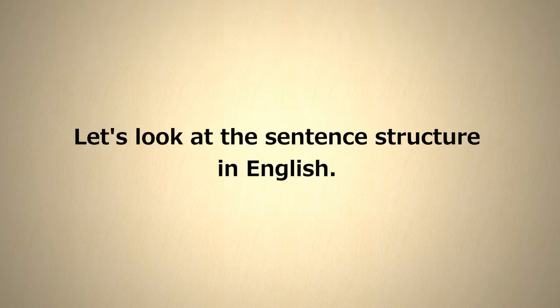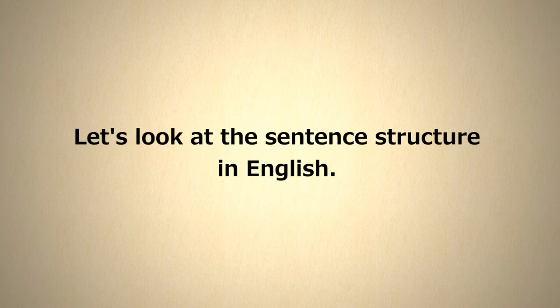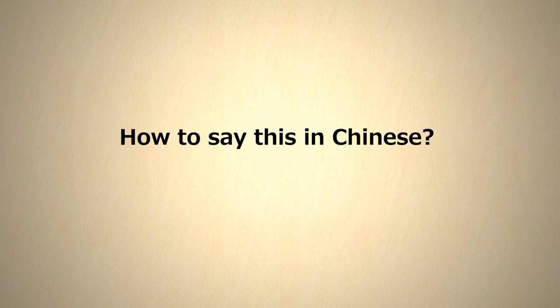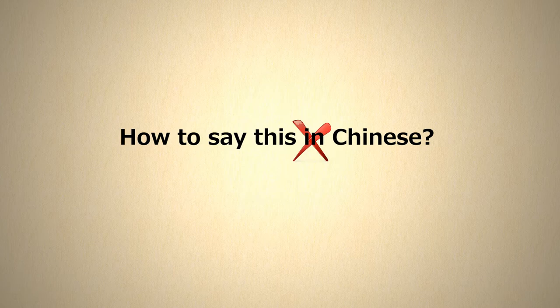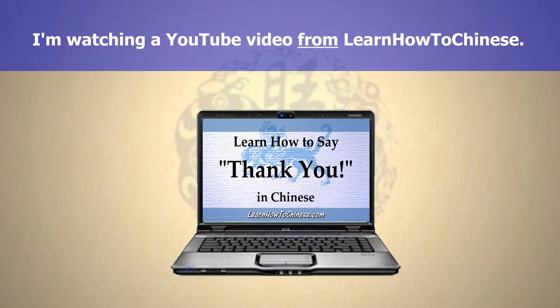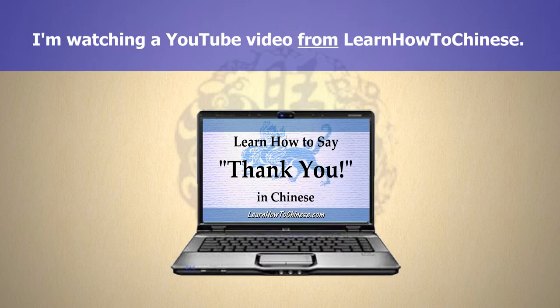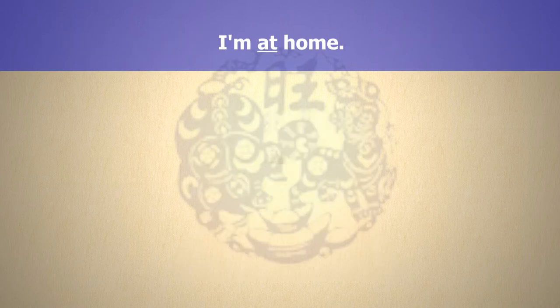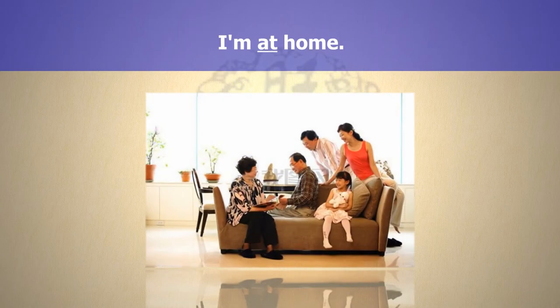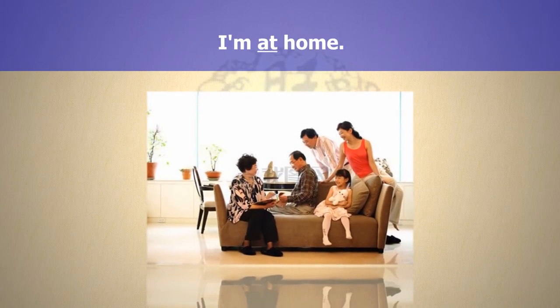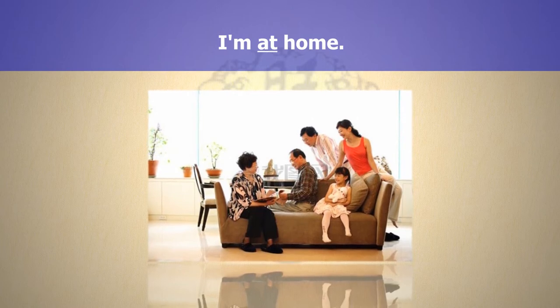To understand the structure of this question, we first look at it in English. In English, we say how to say this in Chinese, but in Chinese, you don't need the preposition in. Chinese people use prepositions when they want to indicate an action such as I am watching a YouTube video from Learn How To Chinese or a location such as I am at home. Don't worry, we will cover this topic in another lesson.